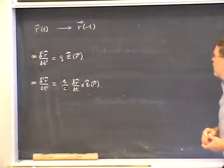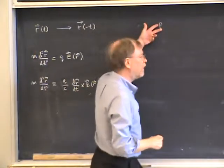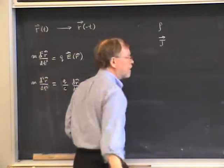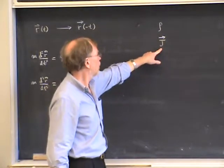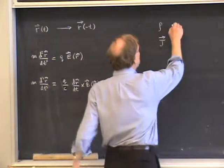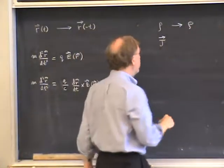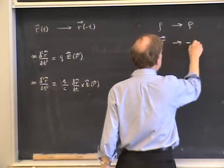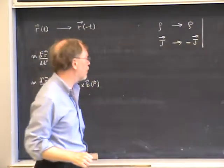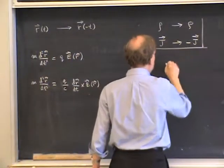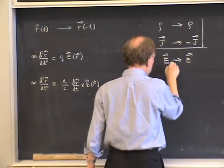As you know, charge densities give rise to electric fields, whereas charged currents give rise to magnetic fields. Charged currents involve the velocities of the particles. So in a time reversal, it's fairly clear that the charge density goes into itself—you're not changing the motion of the particles—whereas the charged currents change sign. Electric fields go into themselves under time reversal, whereas magnetic fields change sign.